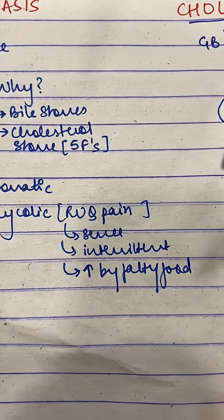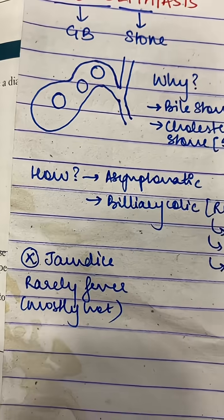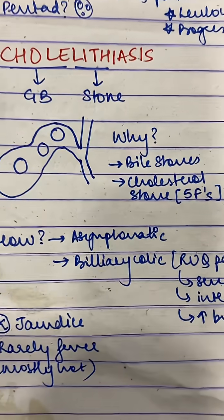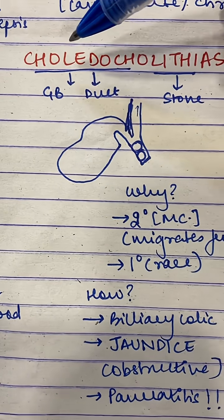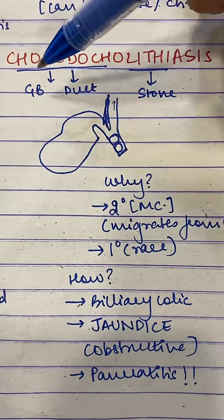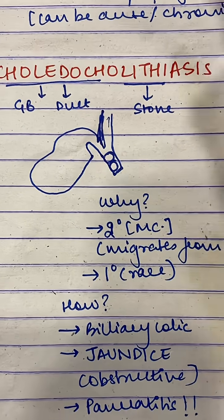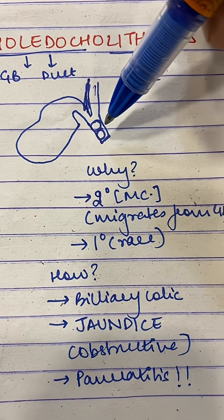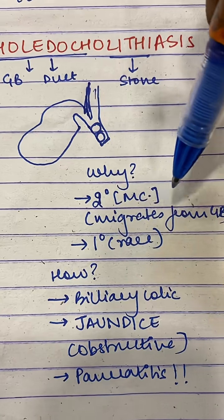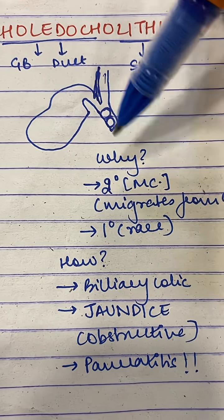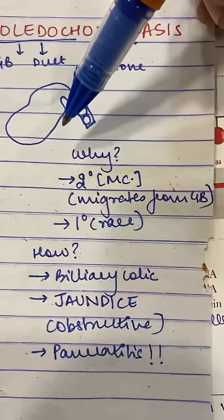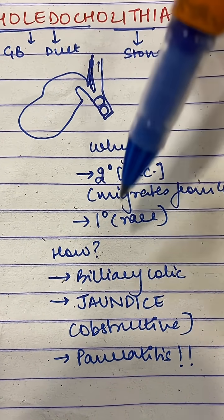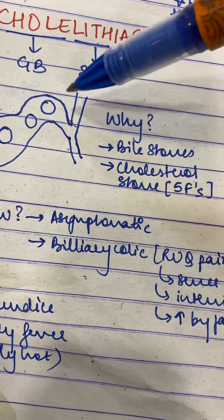Biliary colic is a severe, intermittent pain exaggerated by eating fatty food. There is no jaundice, and rarely ever is there fever — it's just a stone sitting in your gallbladder. Now, choledocholithiasis: 'chole' is gallbladder, 'doco' is duct, 'lithiasis' is stone — self-explanatory. Most commonly it's secondary; a stone in the gallbladder migrates and gets impacted in the duct. Primary stones are quite rare. The stone here causes biliary colic due to obstruction.